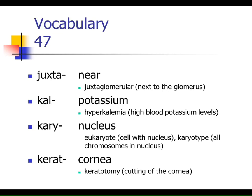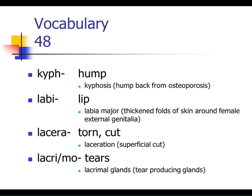Karyo refers to the nucleus — eukaryotes, prokaryotes. Kerat, K-E-R-A-T, refers to the cornea. We saw that kyphosis is a hump-like change in the vertebra. Labio means lip. Laceration — if you have a laceration, you have a tear or a cut. Lacera meaning torn.